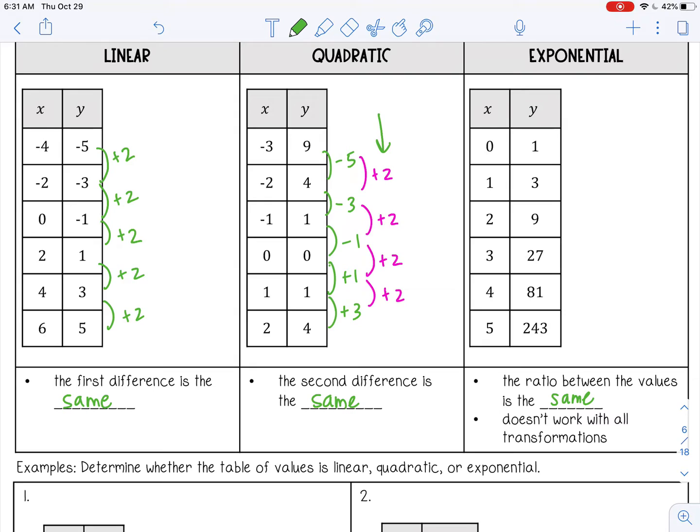So by ratio, I mean the fraction or dividing between consecutive numbers. So 1 over 3, 3 over 9, 9 over 27, 27 over 81, and then 81 over 243.